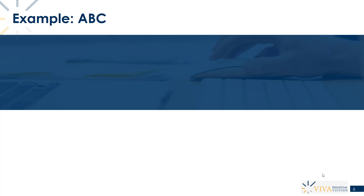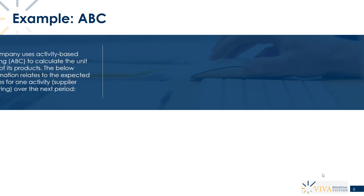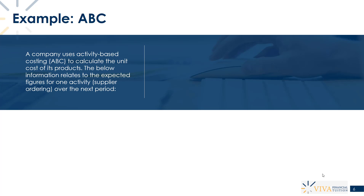Let's take a look at a numerical example for activity-based costing. We have a company that uses activity-based costing to calculate the unit cost of its products. So we produce a range of different products, and we're trying to work out what the overhead cost per unit is to produce these particular products.